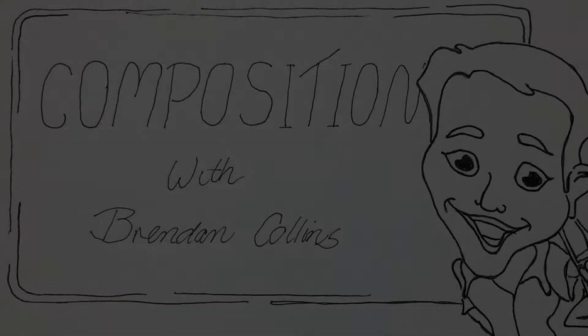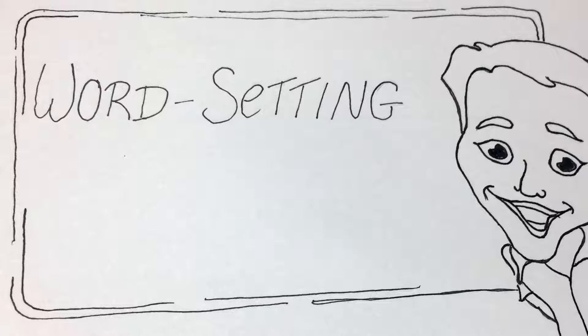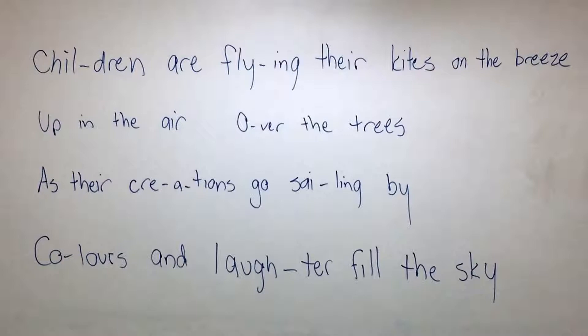Today we are going to create a little scenario. Imagine a poet has come to you as a composer with a short verse that she wants you to turn into a children's song. How do you go about it? Where do you even start? Well, much of the musical information comes from the verse itself. So let's look at the words.